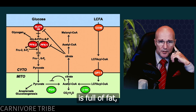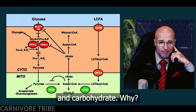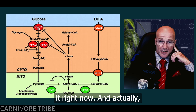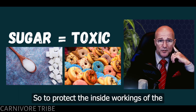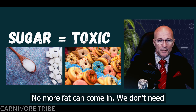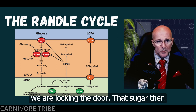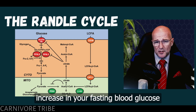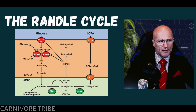When a cell is full of fat, it will lock the door to both fat and carbohydrate. Why carbohydrate? Because there is already heaps of energy stored in that cell ready for use. Sugar inside your cells is incredibly toxic, so to protect important cells like muscle cells and organ cells, the door is locked — no more fat can come in, no more sugar either. That sugar then sits in the blood and pools, which is detectable as an increase in your fasting blood glucose level, which they then diagnose as insulin resistance — but it's nothing of the sort.